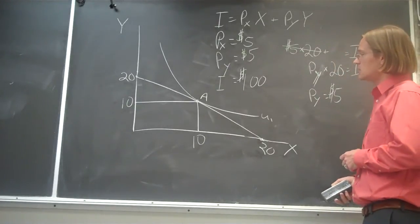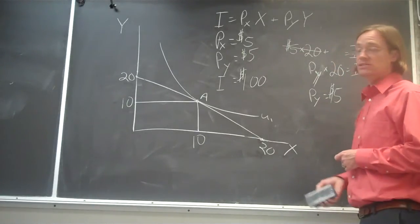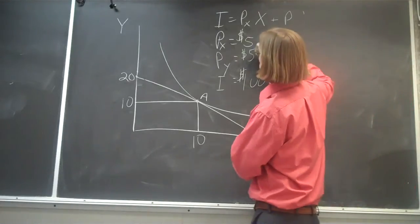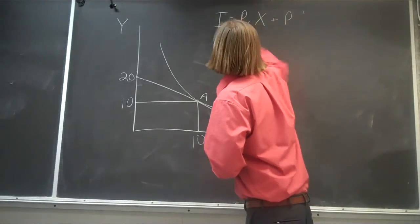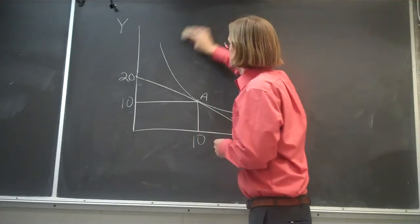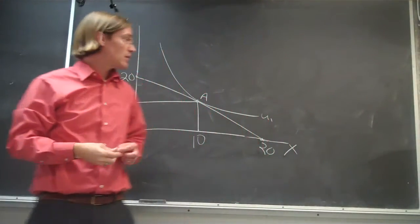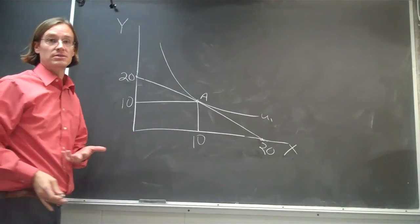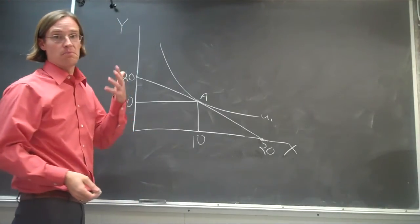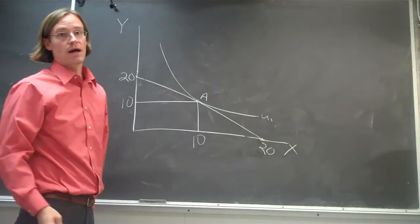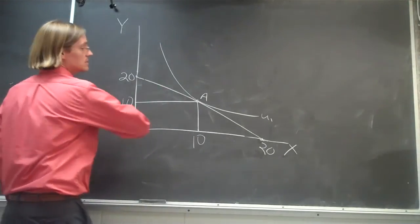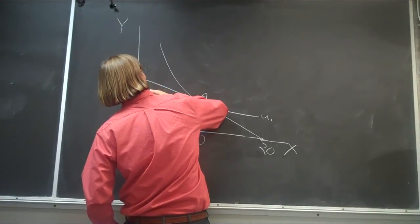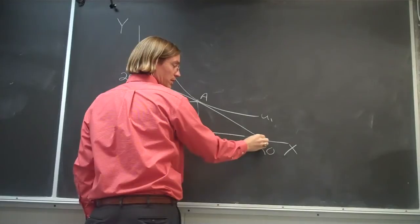What happens now if the price of Y changes? So Y has been 5 dollars. Now you go into the store and all of a sudden you're fired up because one of the two goods that you purchased just decreased in price. So if Y went from 5 dollars to 2 dollars and 50 cents, we're going to see this budget constraint, this budget set rotate around this point.